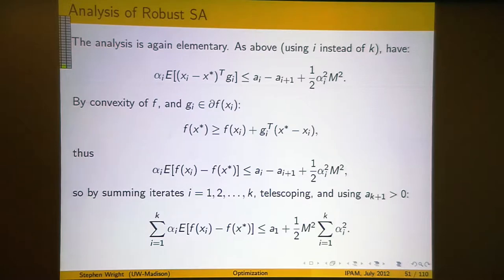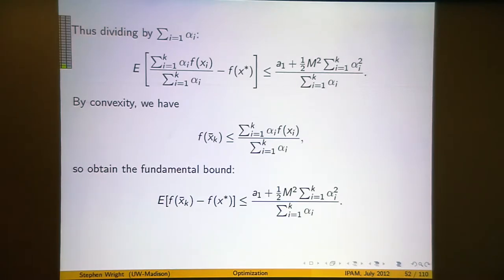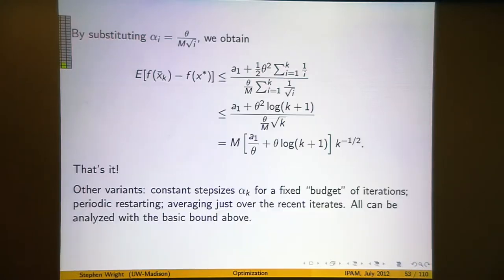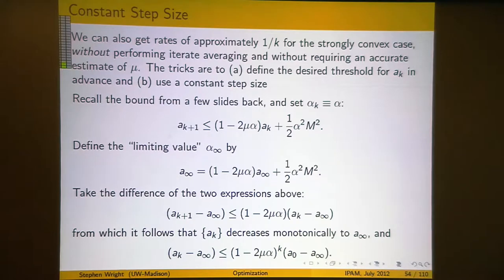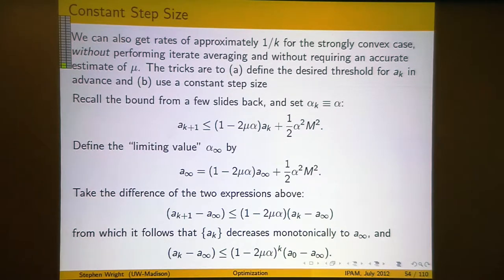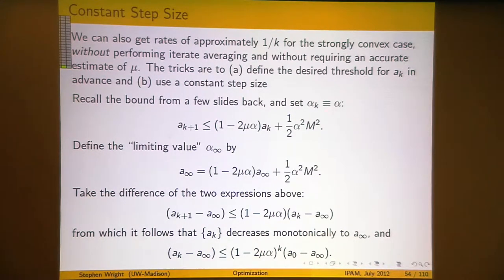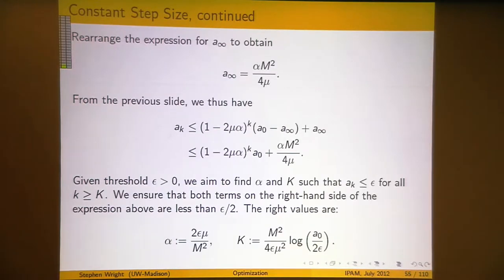We did some analysis of that. I put all the analysis on the slides for full disclosure. I finished up by talking about the constant step size case — dealing with a strongly convex case where we were given a threshold below which we wanted to get the accuracy level, and we figured out how to set the step size to some constant to achieve that threshold after a reasonable number of iterations. Just two slides was all it took to pretty much completely analyze that case, modulo a few little details.